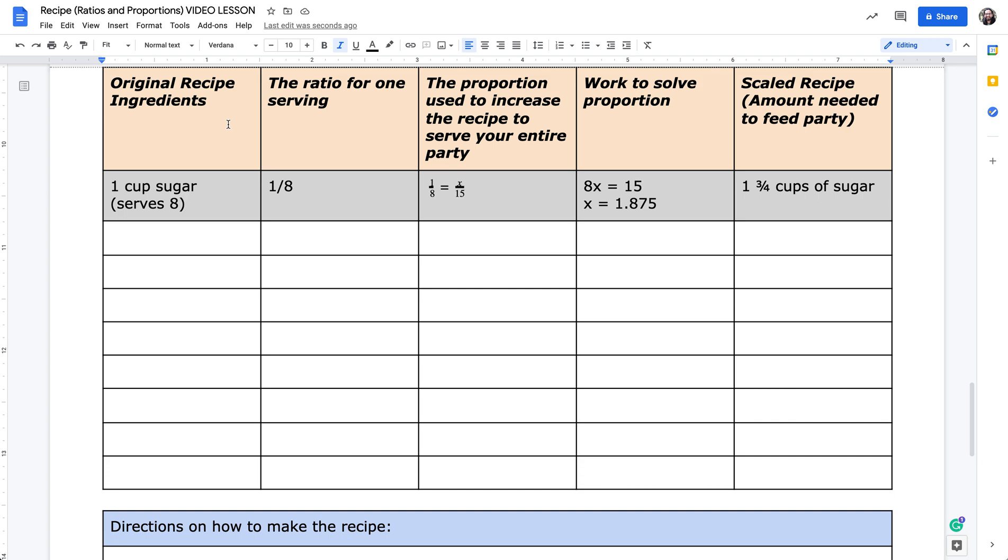I will now type the original recipe ingredients in the first column. I will then write the ratio for one serving, given that my original recipe is made for eight. So I will continue to use the denominator of eight throughout this column. The proportion used to increase the recipe to serve your entire party, which in my case is 12, tells me that I will continue to use the number 12 in the second denominator, which is in the second ratio of my proportion.